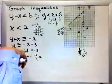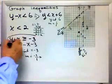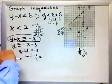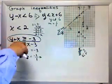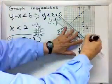Now, when I draw that line, solid or dashed? What do you think? Solid or dashed? I hope you said solid. That equal bar means that line is solid. So, solid line for that one.